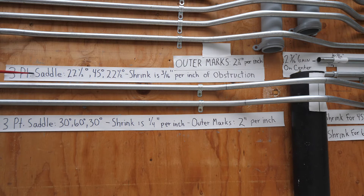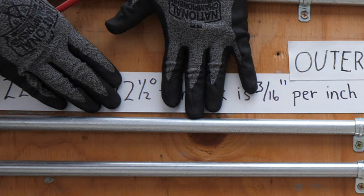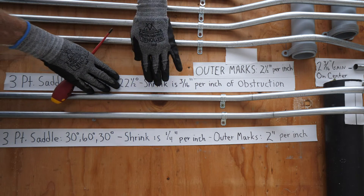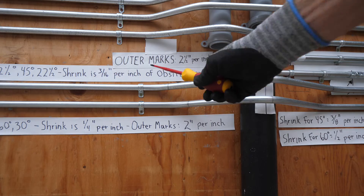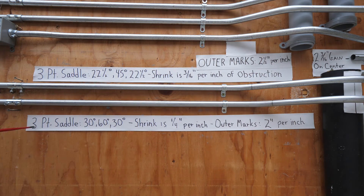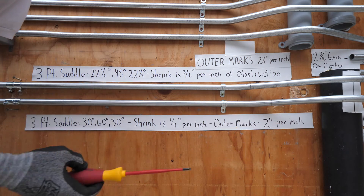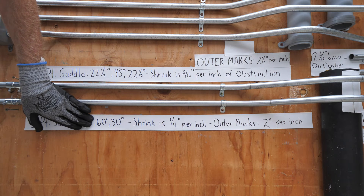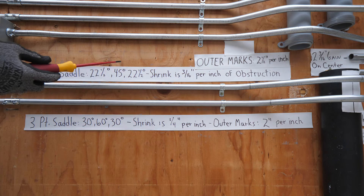Here's how to remember it. For the 22.5/45/22.5 three-point saddle bend, look at the angle 22.5 — it literally reads '2.5,' so the outer marks are 2.5 inches per inch of height. For the 30/60/30 saddle bend, take the center angle 60 and divide it by the outer angle 30 — 60 divided by 30 equals 2 — so the outer marks are 2 inches per inch of height. The 22.5/45/22.5 uses 2.5 inches per inch, and the 30/60/30 uses 2 inches per inch.